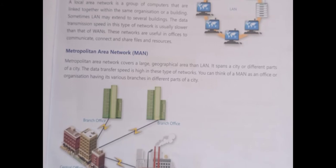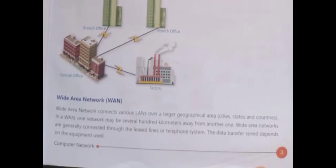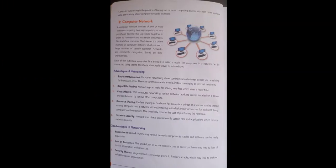Second is MAN — Metropolitan Area Network. It covers a large geographical area as compared to LAN and spans a city or different parts of a city. Third is WAN — Wide Area Network. It connects various LANs over a larger geographical area such as cities, states, or countries. If we want to communicate with friends abroad, we use WAN.